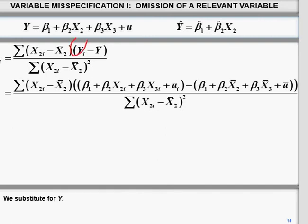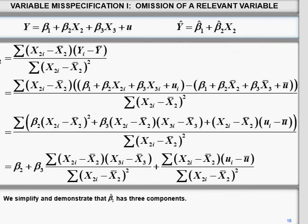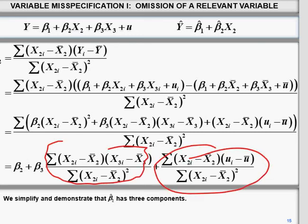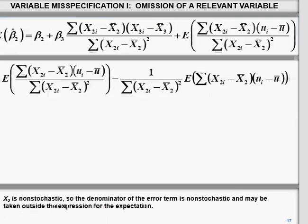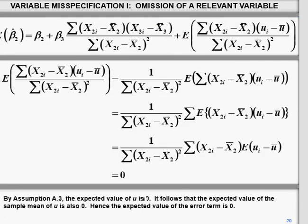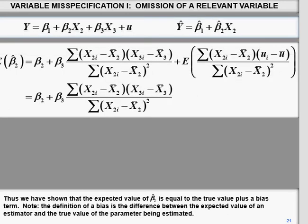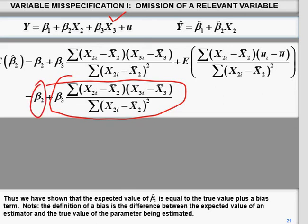You place the value of y_i and y-bar into the formula, summarize, and after simplification you are left with the key terms. The expected value of u_i is zero, so that term vanishes. What remains is the bias in beta 2 hat. When x3 is a relevant variable but you don't include it, beta 2 hat is not equal to the true beta 2 — it carries an additional bias term. We will demonstrate this empirically using an example from the book.